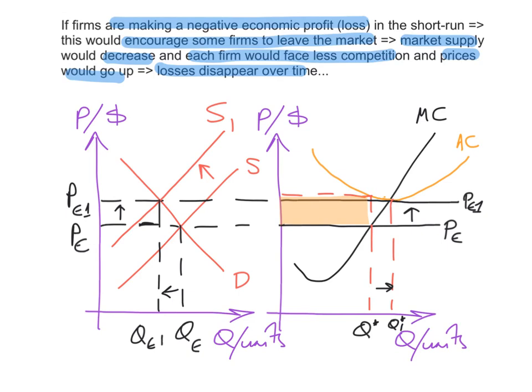Therefore, in the short run, perfectly competitive firms can either earn abnormal profit, make a loss, or earn normal profit. But in the long run, perfectly competitive firms can only earn zero economic profit — only a normal profit. Thank you very much.